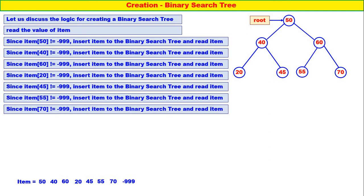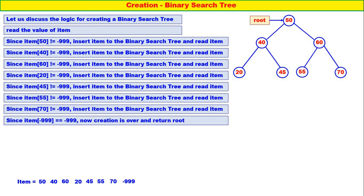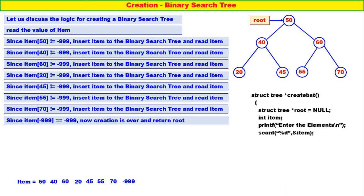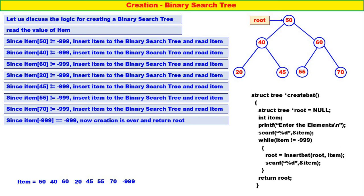Then again read one more item: minus 99. Now item minus 99 is equal to minus 99 — creation is over, and return root. That is all, very simple. The small function for creating the BST: int item, enter the elements, scan item. While item is not equal to minus 99, insert the item and read again one more item — go on doing this while loop. Whenever item becomes minus 99, come out and return root. That is all — simple function for creating a binary search tree. The binary search tree, insertion into a binary search tree, and creation of a binary search tree — all of them are quite simple and straightforward.